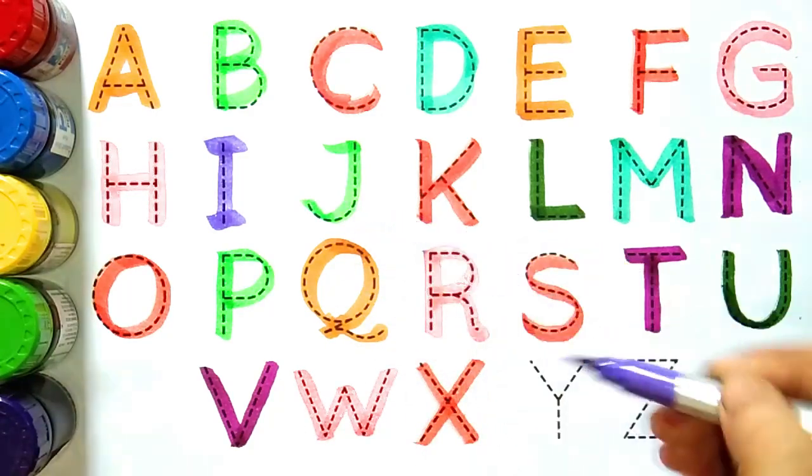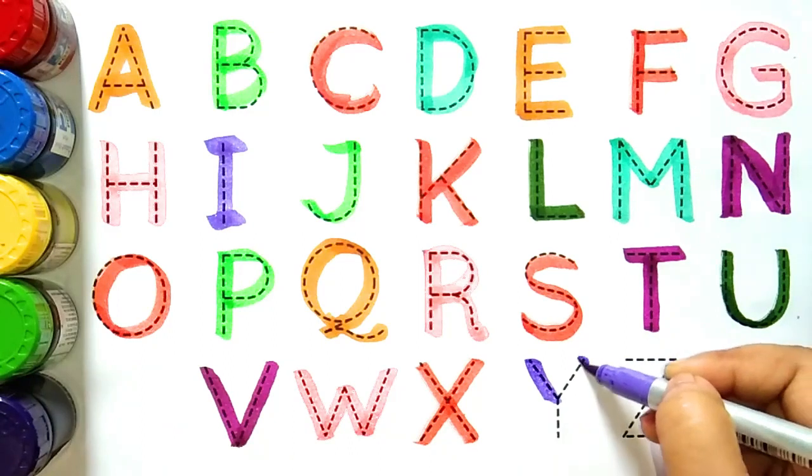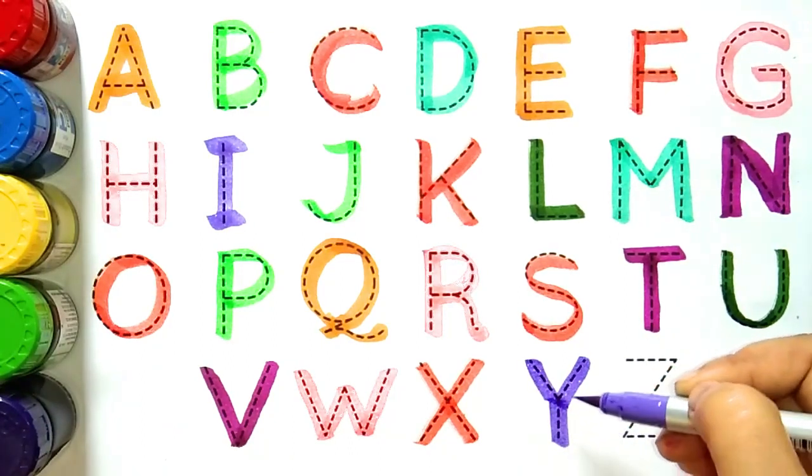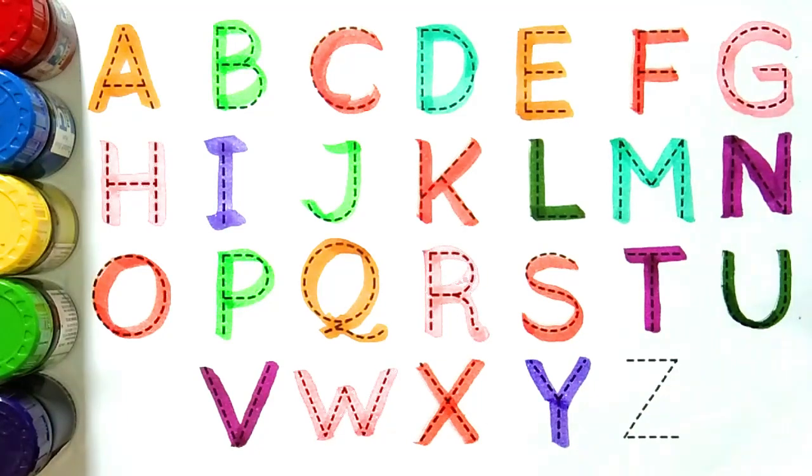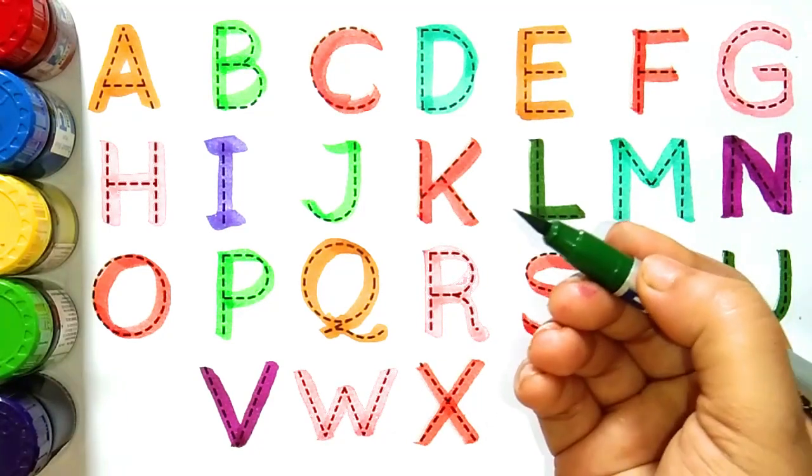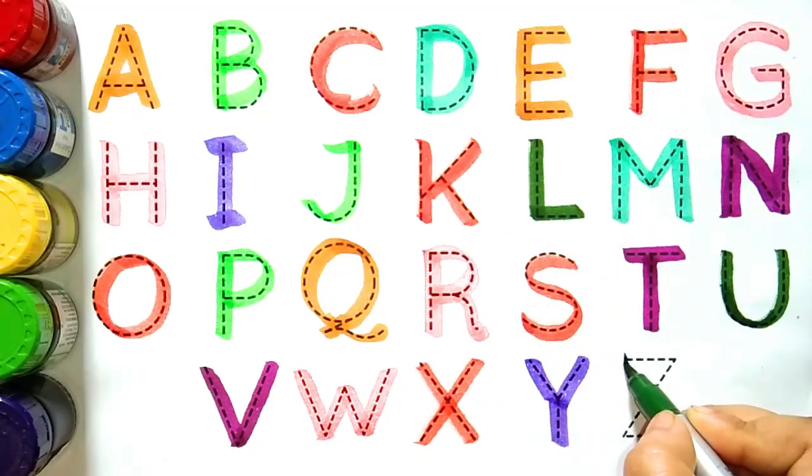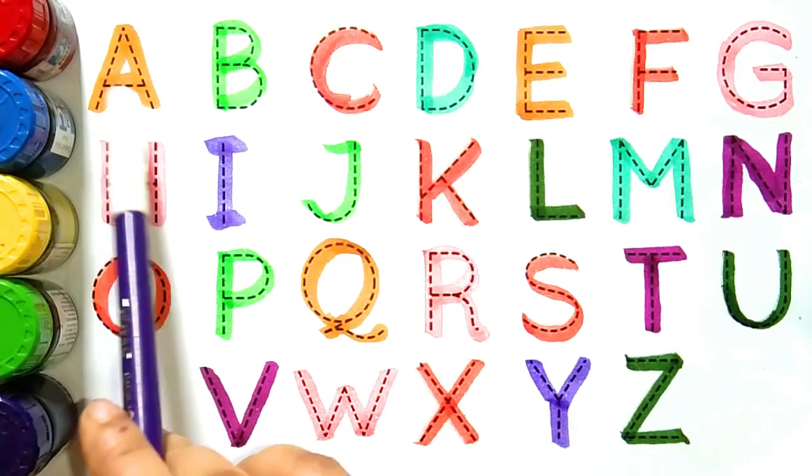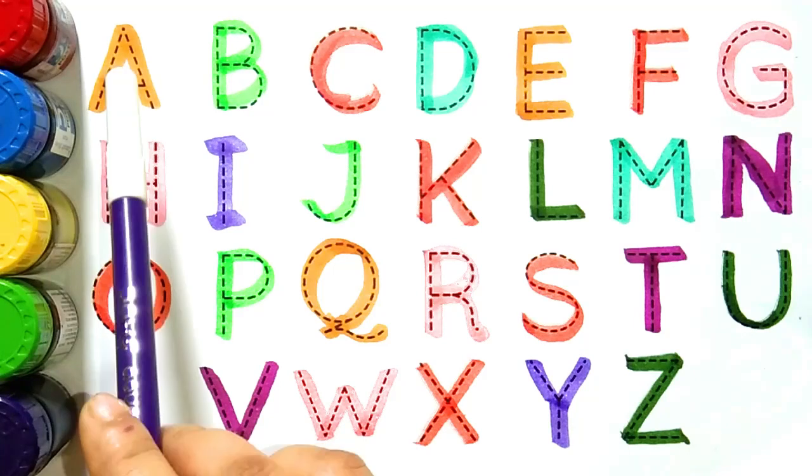Orange color. X, X for xylophone. X for kya hota hay bacho, X for hota hay xylophone. Violet color. Y, Y for yak. Y for kya hota hay bacho, Y for hota hay yak. Green color. Z, Z for zebra. Z for kya hota hay bacho, Z for hota hay zebra.